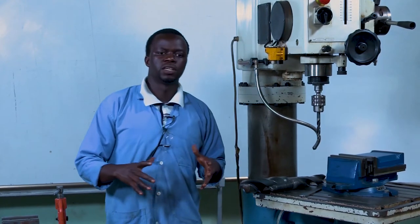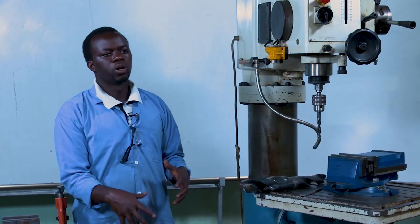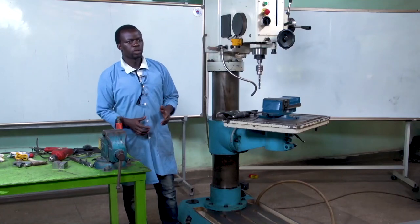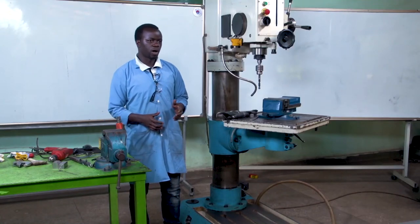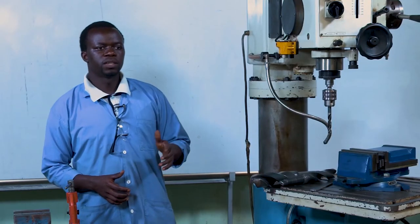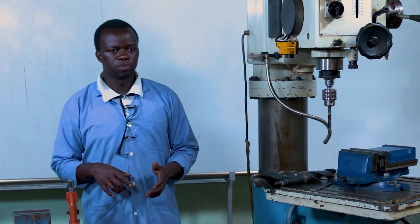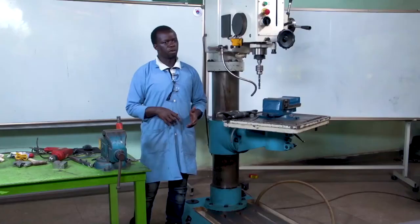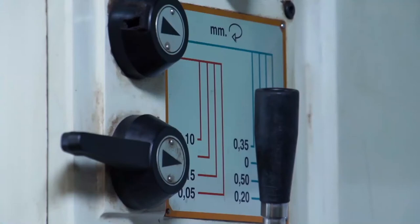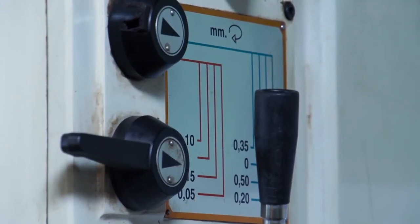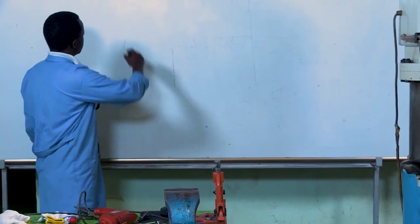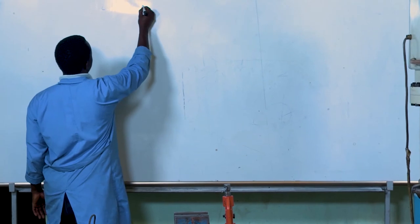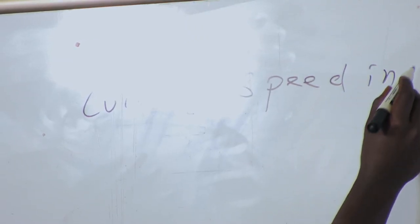After seeing the tools and the machine and its parts, we are going to look at machining parameters. We have cutting speed. Cutting speed in a drilling operation refers to the peripheral speed of a point on the surface of a drill in contact with the workpiece. For calculating the cutting speed, the formula is: CS = (π × D × N) / 1000, where D is the diameter of the drill bit in millimeters and N is the RPM of the drill spindle.